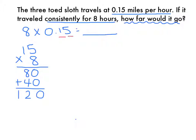There are two decimal places in my factors. So I need to take this decimal point and move it over to the left two places, which gives me 1 and 20 hundredths.